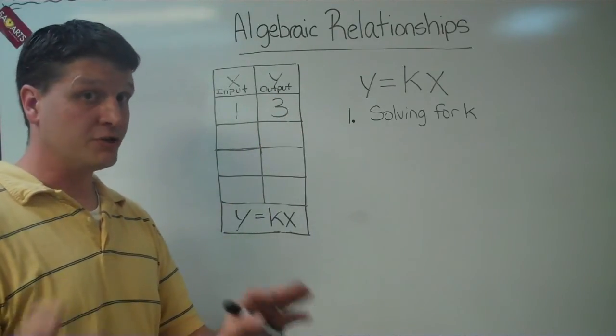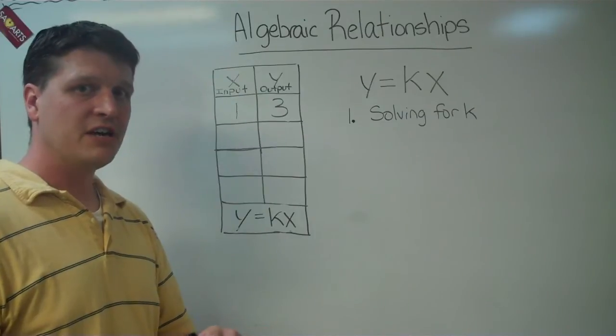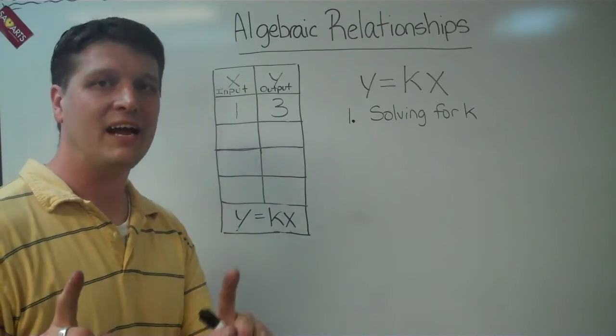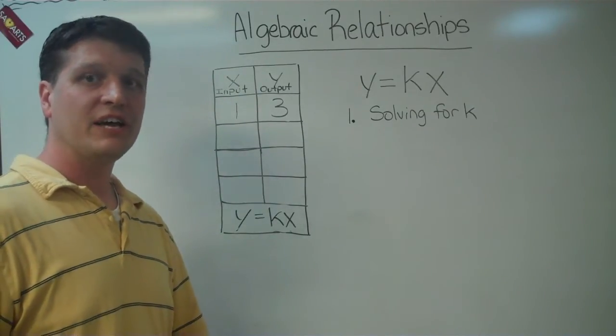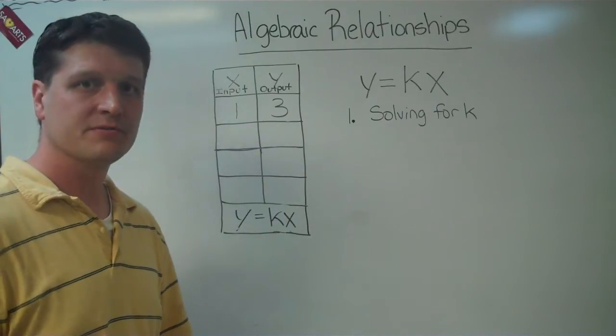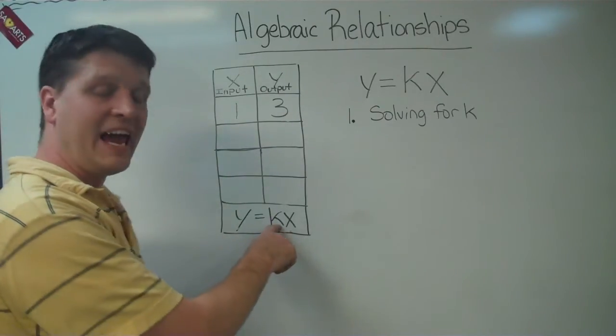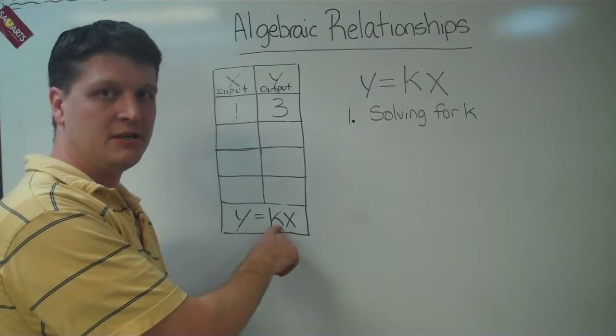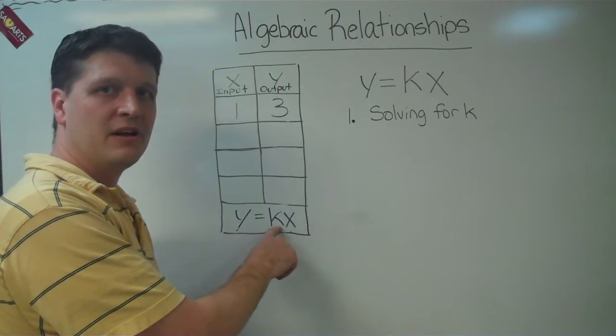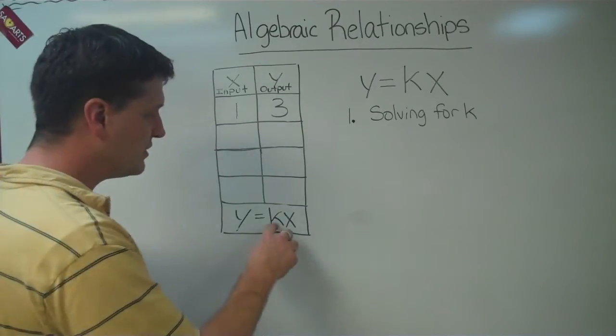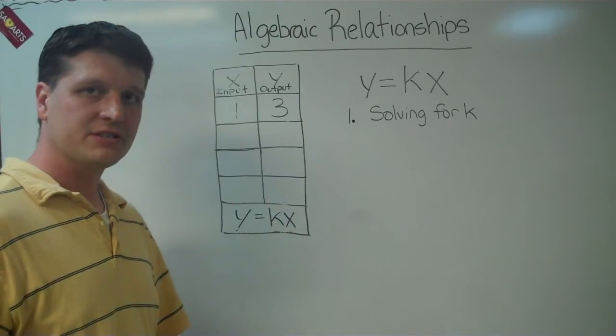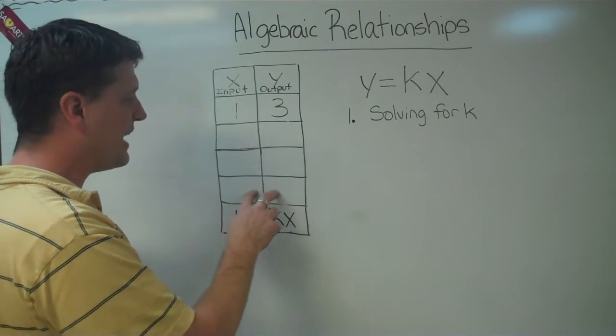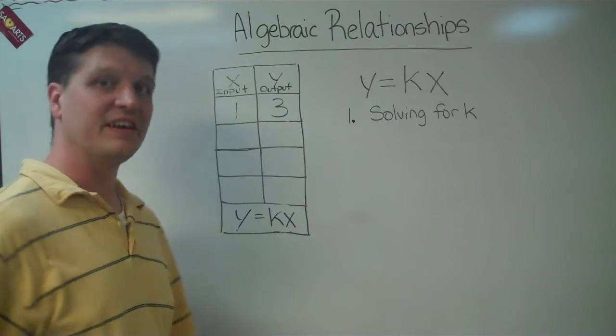There's a relationship between those two inputs and outputs, and we're going to determine that right now. And the relationship between those inputs and outputs gives us what our k is. And our k is the constant number, the number that we're going to put into this equation to help us find the missing data underneath the given data.